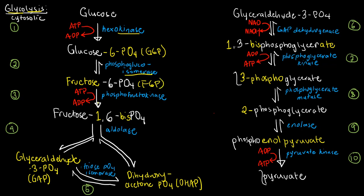In step three, the enzyme phosphofructokinase, often abbreviated as PFK, converts fructose-6-phosphate into fructose-1,6-bisphosphate. The only change is that from one phosphate at carbon 6, we add an extra one at carbon number 1. The prefix bis means there are two phosphates. Tracing the first three steps from glucose to FBP, we added two phosphate groups, which means we sacrificed two molecules of ATP.